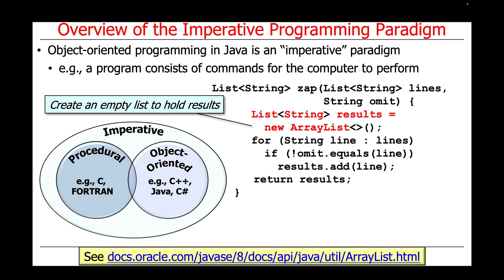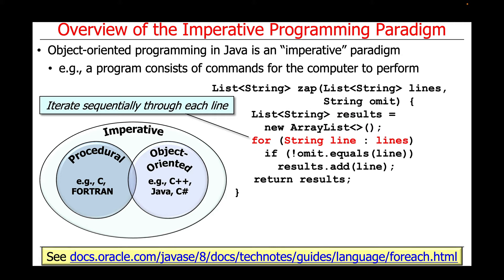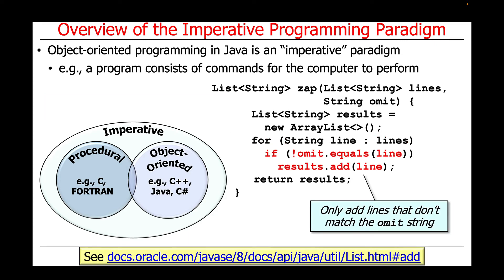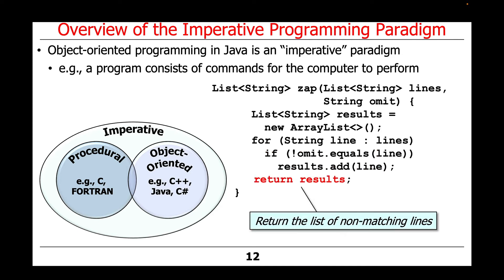We make a new ArrayList and assign it to a local variable called results, which is of type List of String. We next use a Java for-each loop to iterate sequentially through each line in the list of strings. We then use an if statement to check whether the line equals the omit string we're trying to get rid of. If it equals, we ignore it; if it doesn't, we add the line to the results list using the add method. Finally, we return the list of non-matching lines back to the caller.